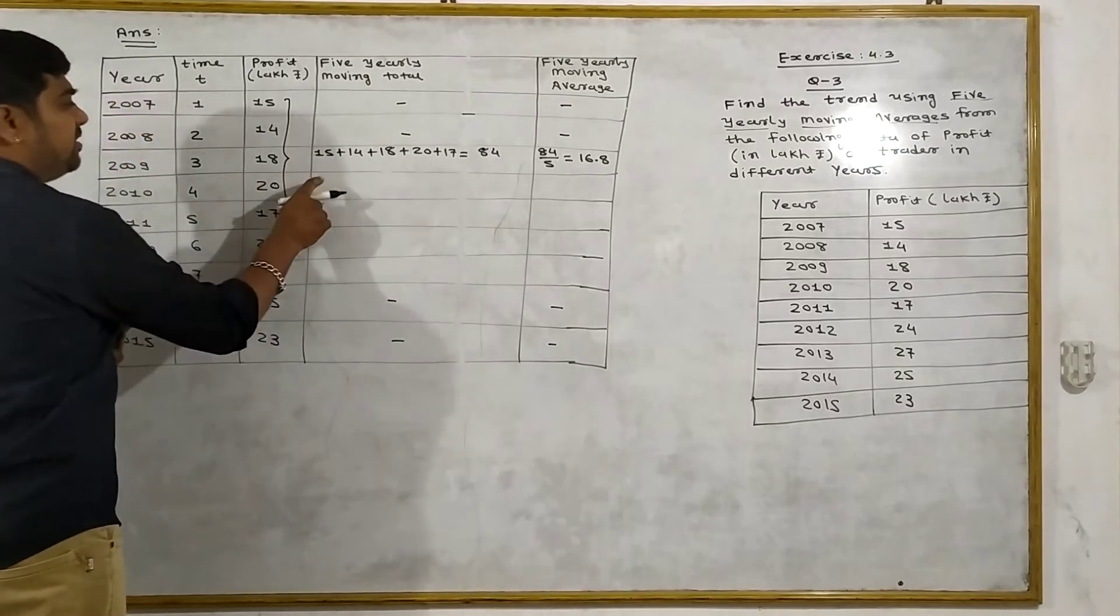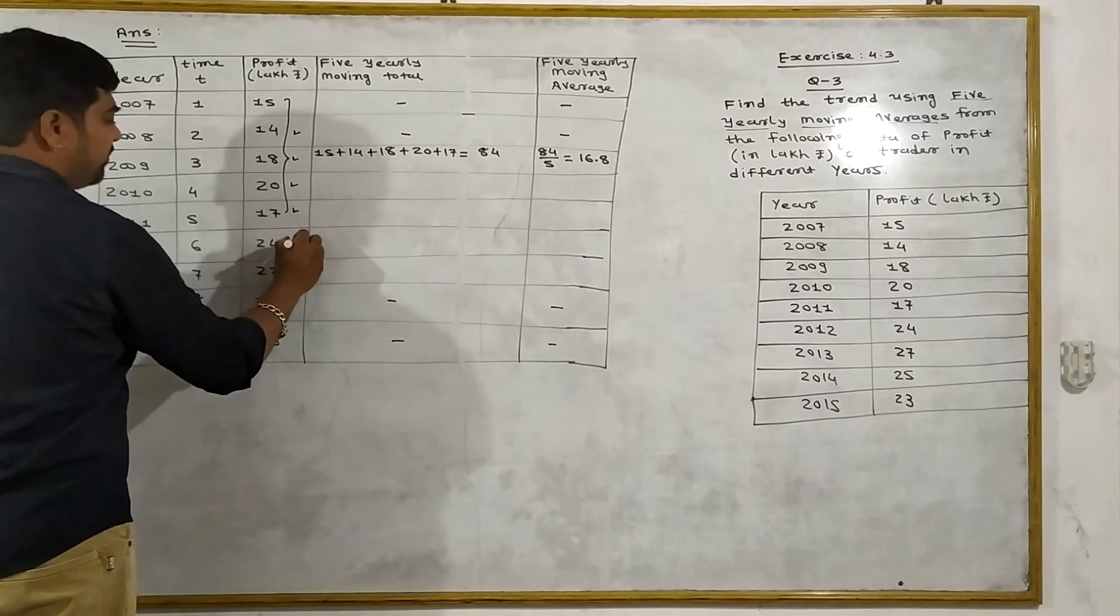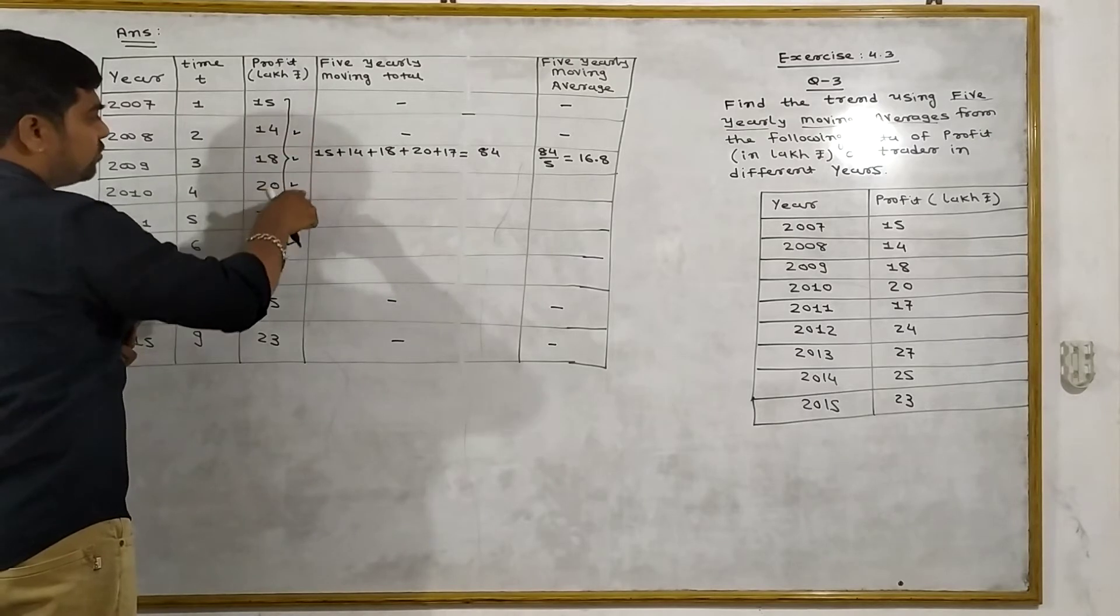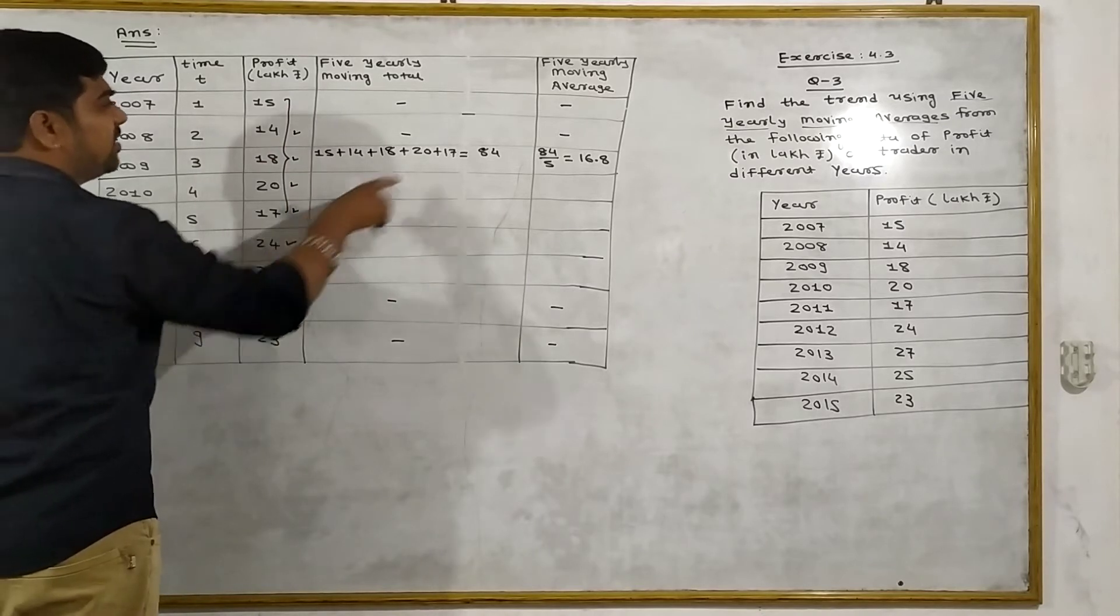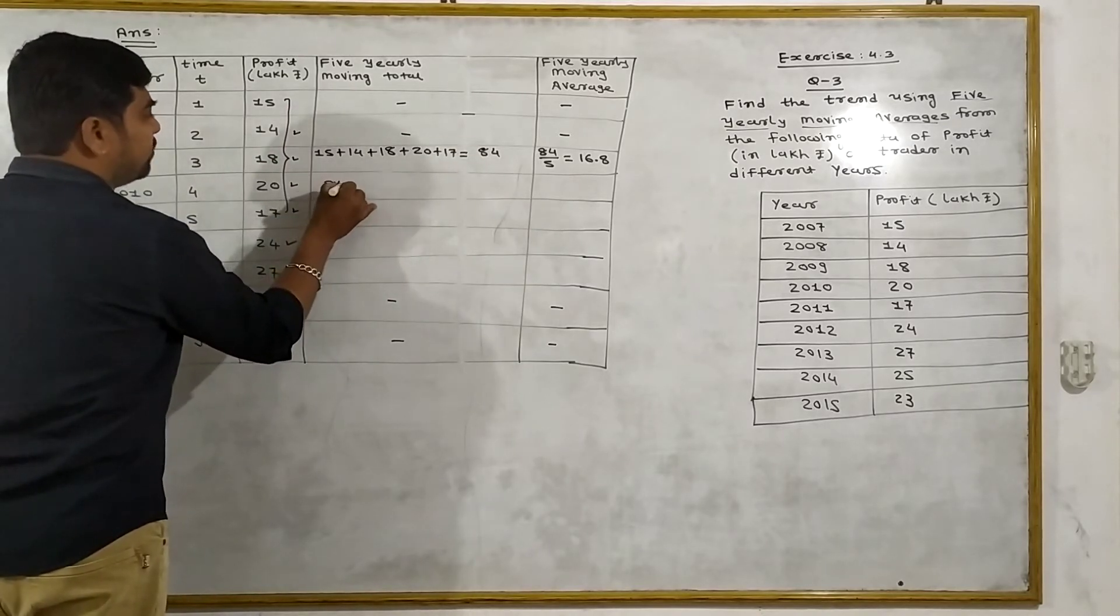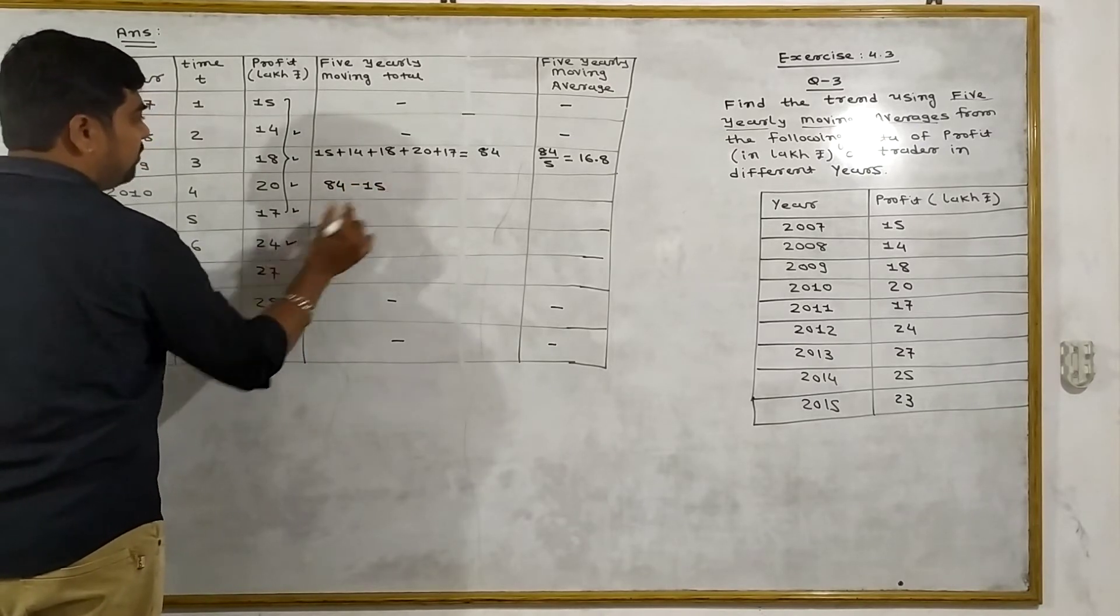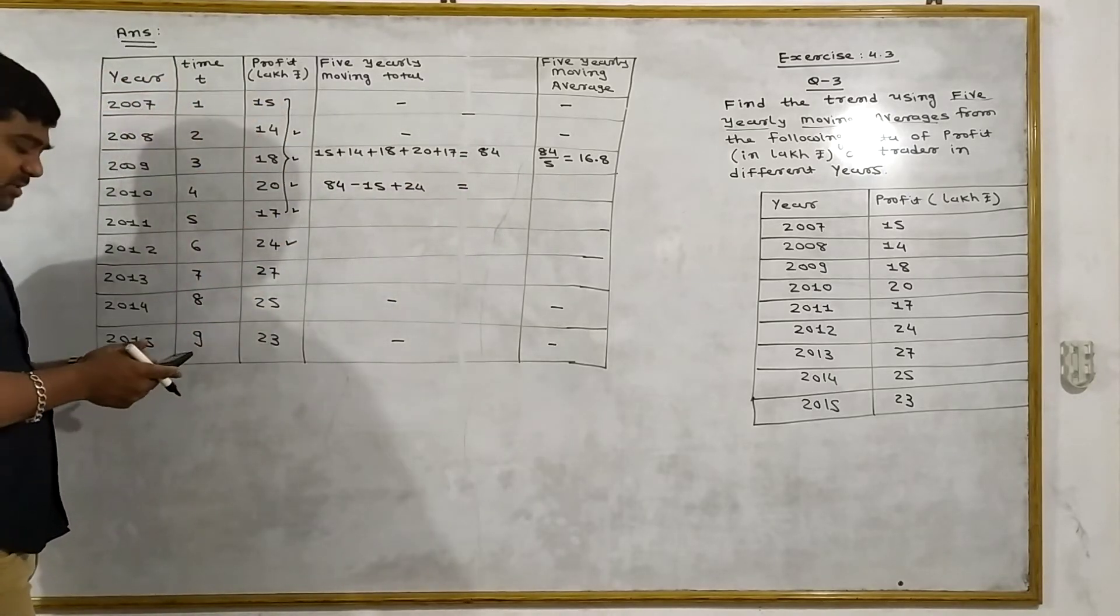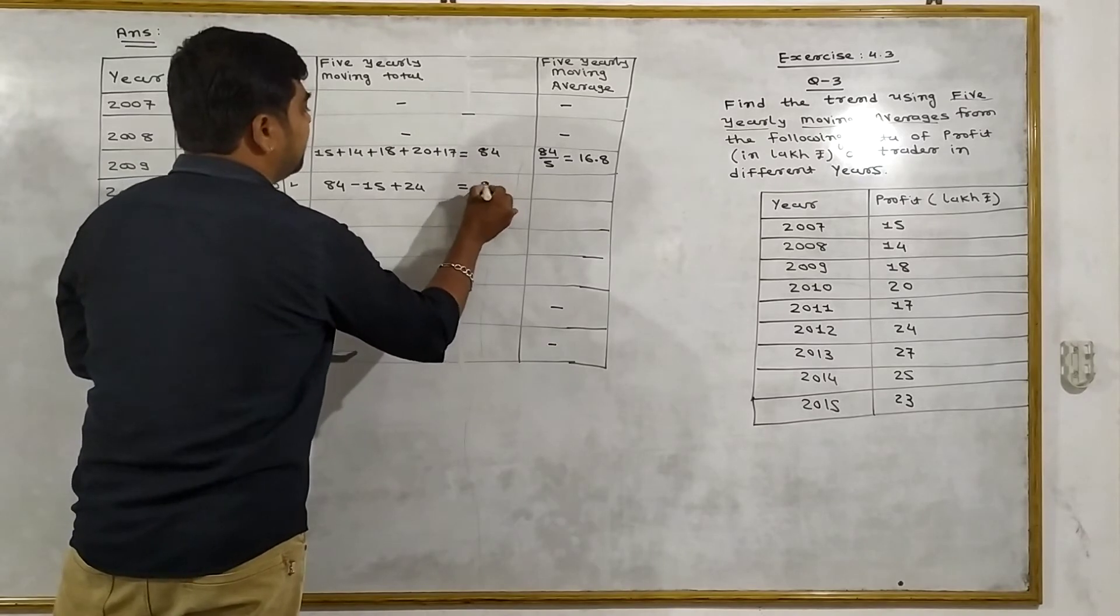The next total is 93. Here the same values are used: 14, 18, 20, 17 and 24. Instead of repeating all 4 values, we use a shortcut: take the previous total 84, minus the first value 15, plus the new value 24. This gives us 93.